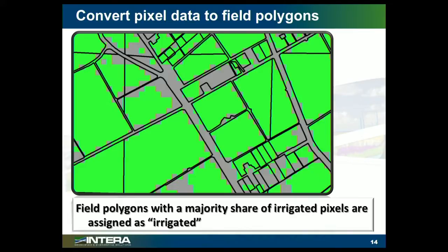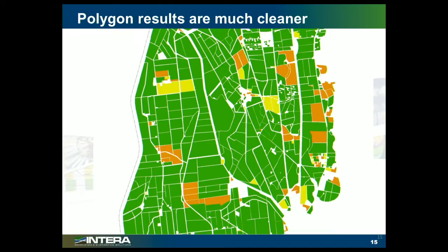One thing that we've realized works pretty well is: if we've got a given field boundary polygon and the majority of that is filled with areas that the Landsat image indicates as being irrigated, then we'll just assign that whole polygon as being irrigated. So that gives you a much, much cleaner result.